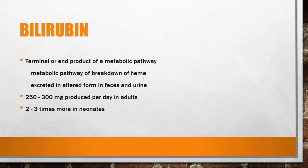Heme is obtained from hemoglobin. So if we break down heme, we get bilirubin, which is excreted in many forms in feces and urine. The daily production of bilirubin is between 250 to 300 mg, but it is two to three times more in the case of neonates.